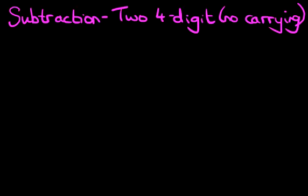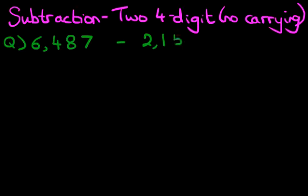So, let's have a look at the question we're going to work through. What is 6,487 minus 2,153? 6,487 minus 2,153.